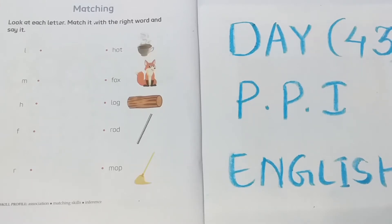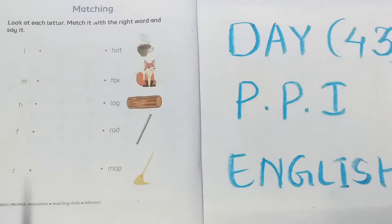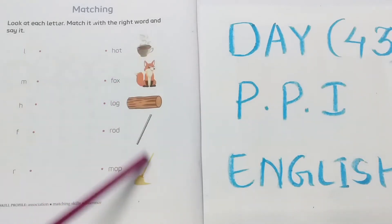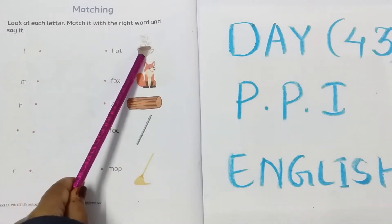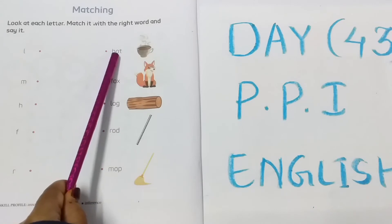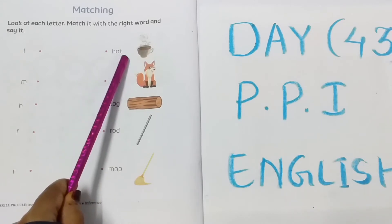L. See, this side is letters and this side is words and pictures. What is this first picture? Hot. The spelling of hot is H-O-T, hot.